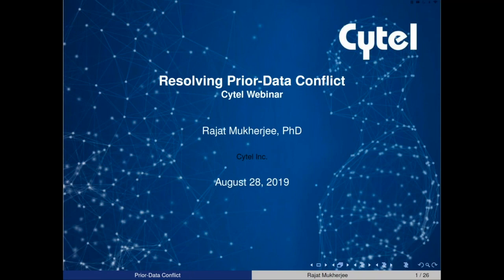The topic of today's webinar is resolving prior data conflict. It's well acknowledged that late phase clinical trials in rare and complex diseases can benefit enormously by borrowing from historical data. While in the frequentist framework borrowing amounts to pooling via appropriate matching, in the Bayesian framework this is achieved by the use of informative priors constructed using historical data. Importantly, arbitrary borrowing from historical data can have detrimental effects on the operating characteristics of the design. Today Rajat will present two ways to control the influence of the prior data on the posterior inference under prior data conflicts.